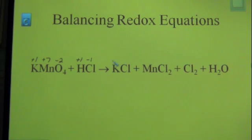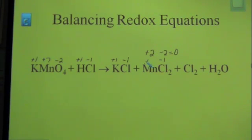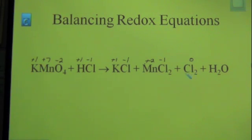For potassium chloride, it balances with a plus 1 and a negative 1. For manganese chloride, the halogen is negative 1 again. We have two chlorines and everything must add up to zero, so manganese here is a plus 2. Free elements are always 0, so chlorine in its elemental form is 0. And water is always plus 1 for hydrogen and negative 2 for oxygen.